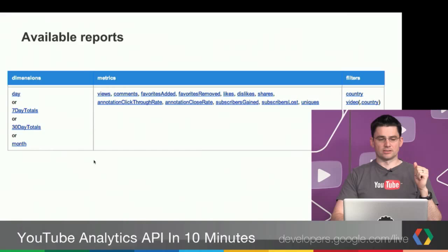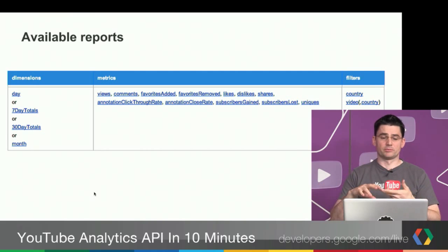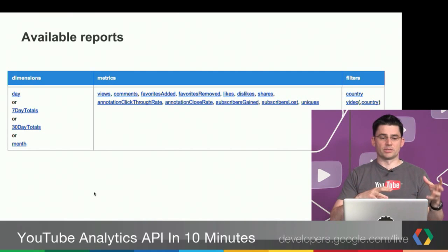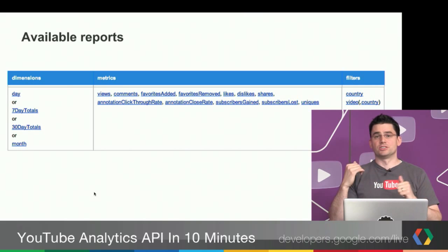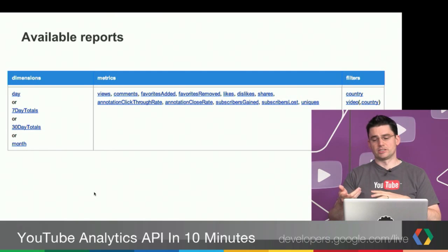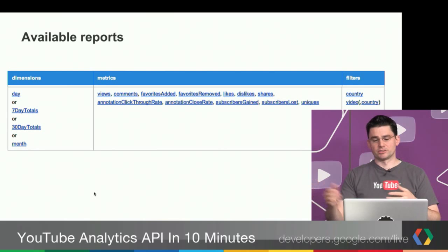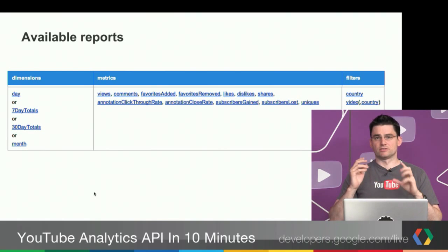In this case, I'm actually going to look at just getting the views. You can see here for metrics, I could combine a bunch of these — I could combine views, comments, favorites added, a bunch of great stuff. And then I can do it on a dimension by day, seven-day totals, or a month. I'm actually going to show you an example by month. You can combine those two. And then on the right, you can filter it either by country or by video, which is a video ID, and then by country if you choose to do those. So again, you kind of put your report together, get a rough idea with the big three, and then you look at the available reports for the channel, and you decide what you want to do from there.